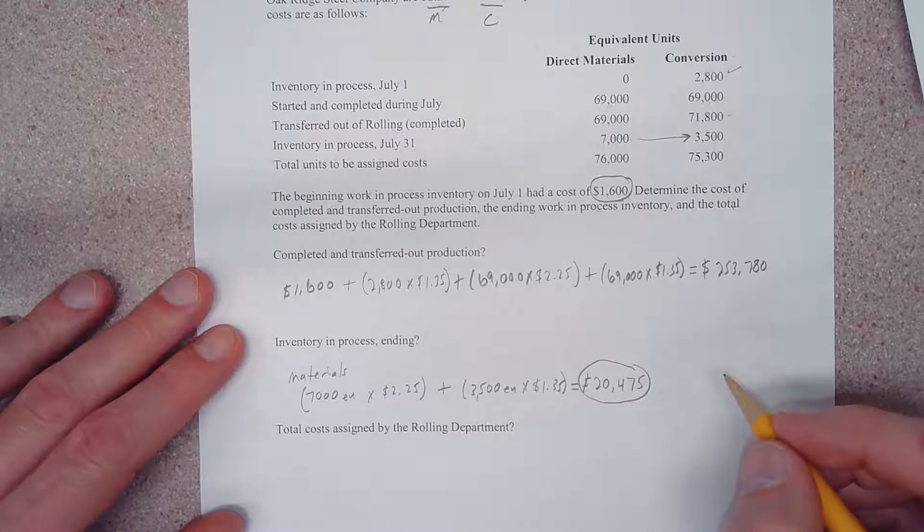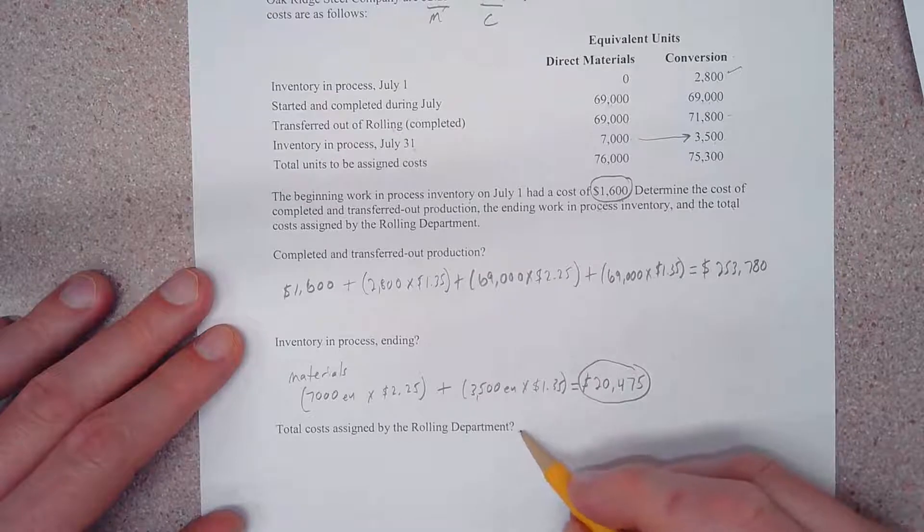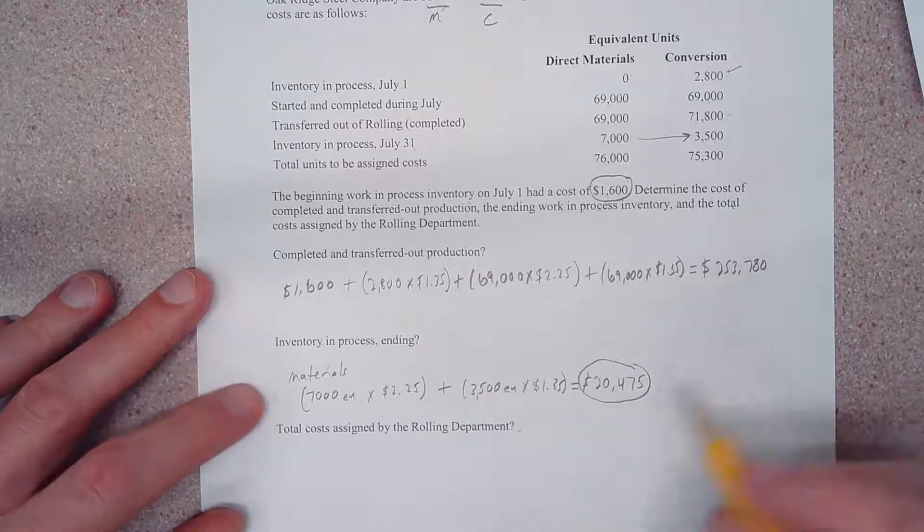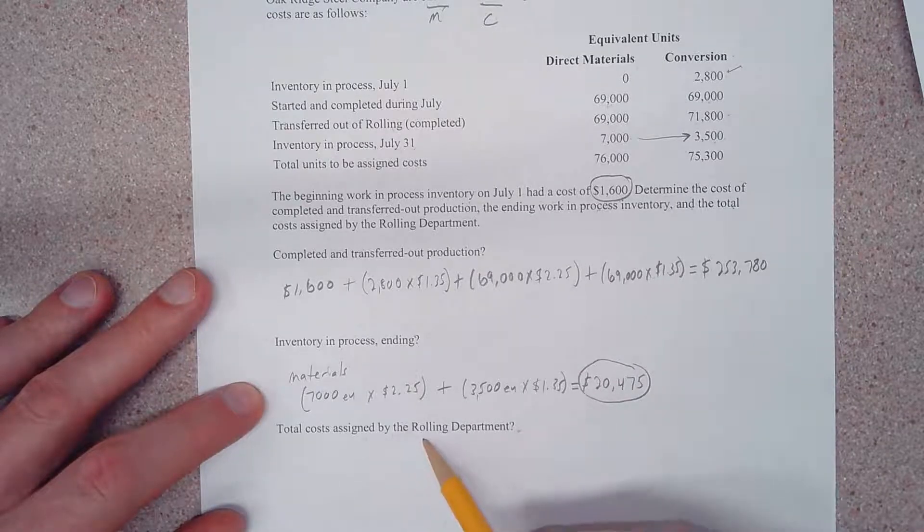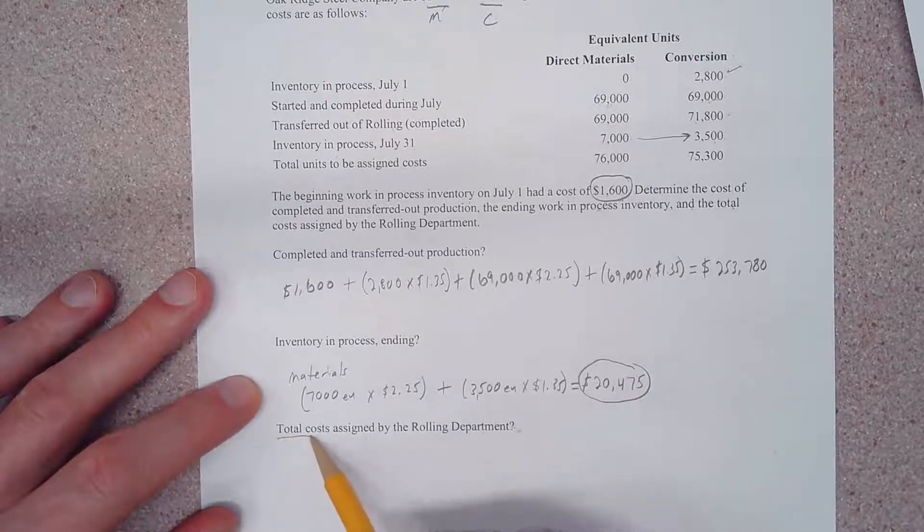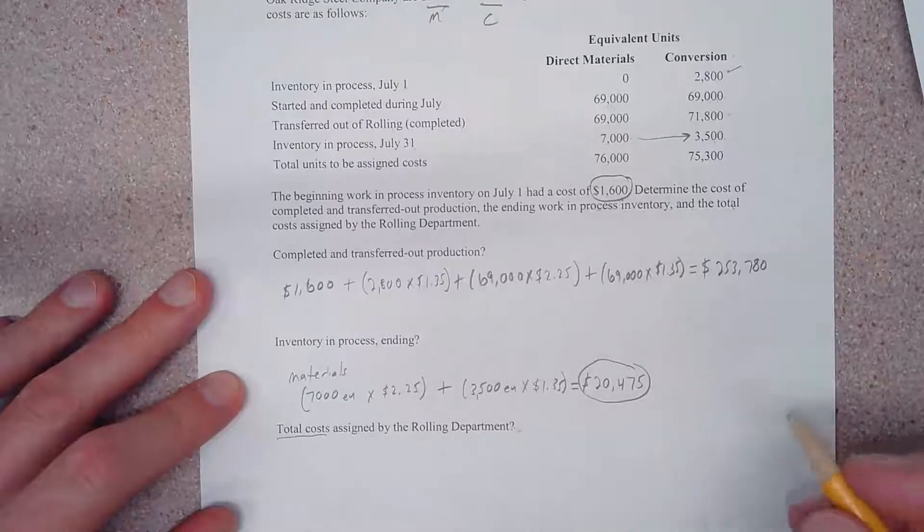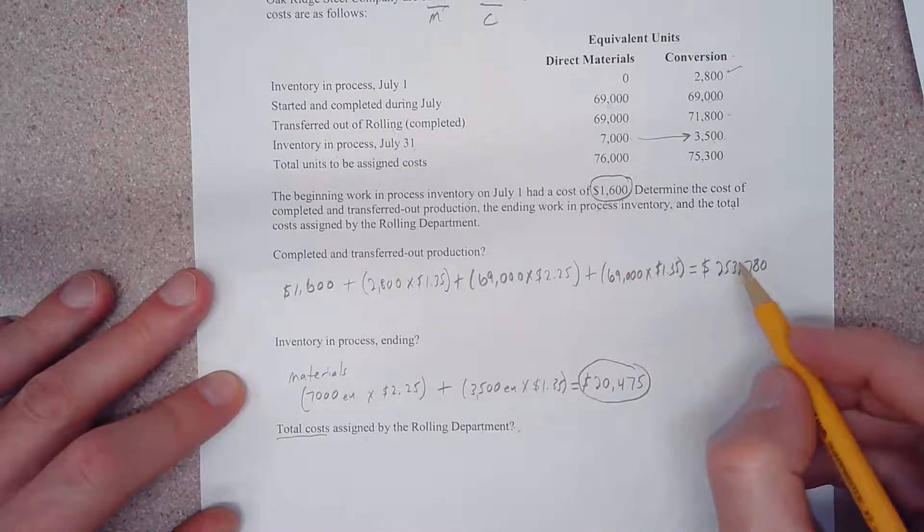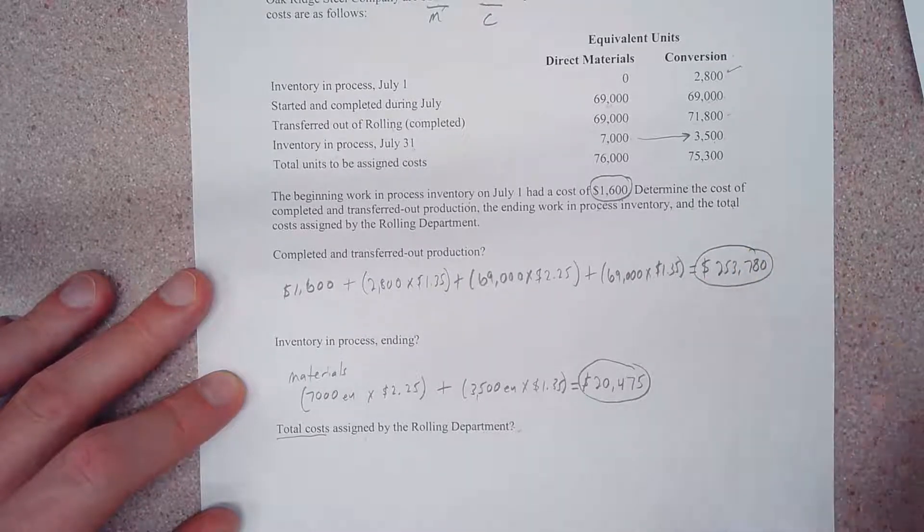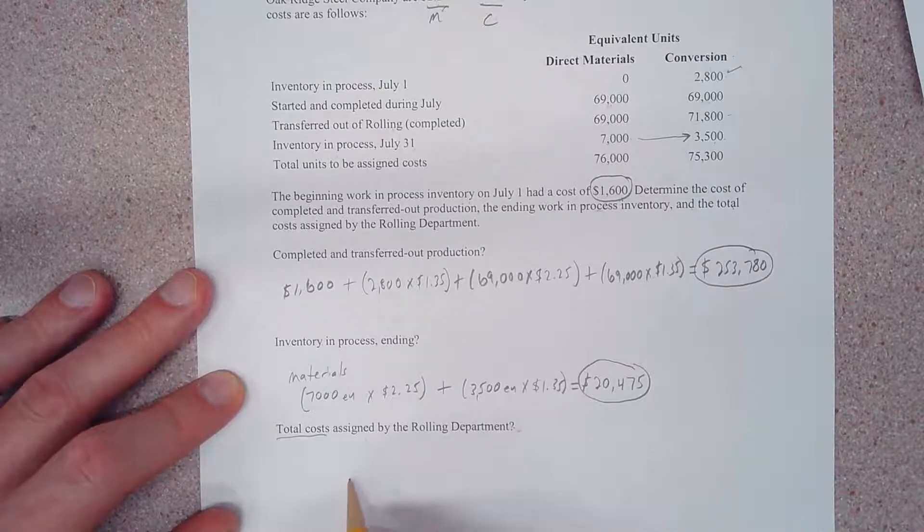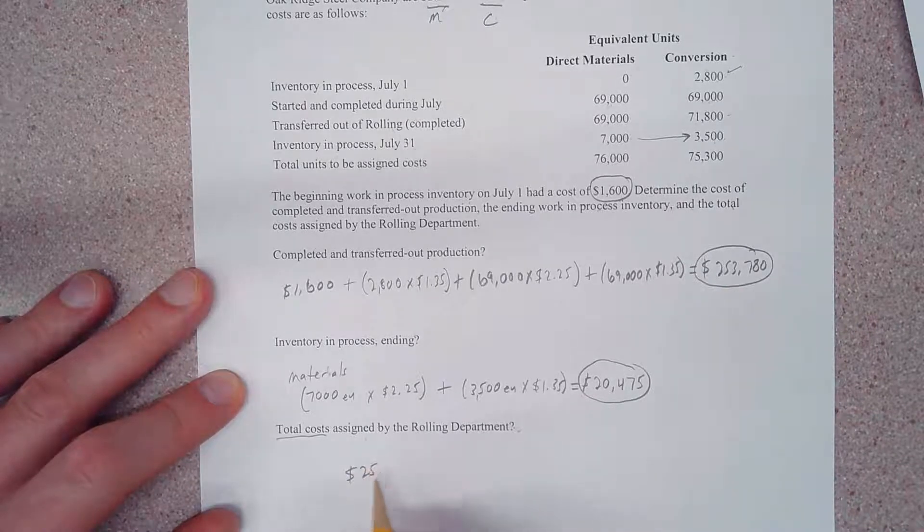Alright, let's go ahead and do this last part. It says 'total costs assigned by the rolling department.' Well, this is pretty simple. All we do is take both of these figures - take our $253,780,